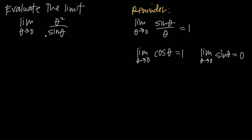In this problem, we have the sine theta value in the denominator. We have two trigonometric limit formulas that involve sine of theta, but one is just the limit as theta approaches 0 of sine of theta equals 0. If we evaluate the limit as theta approaches 0, in the numerator we get 0 squared, which is 0, and in the denominator we get sine of 0, which is also 0. So this becomes 0 over 0 — that's an indeterminate form; we can't evaluate it because we can't divide by 0.